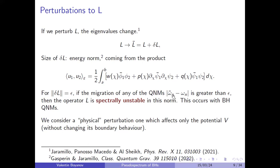If the perturbation to the operator is small with respect to the energy norm, and the migration of the quasi-normal modes in the complex plane is greater than the magnitude epsilon of the perturbation, then the operator L is said to be spectrally unstable in this norm. This occurs for black hole quasi-normal modes. We consider only physical perturbations to the operator — that is, perturbations that only affect the potential of the problem without changing boundary behavior or the structure of discretized derivative operators.